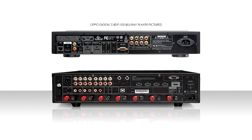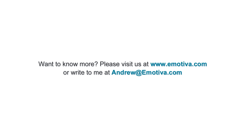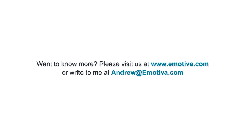With our AV preamp and multi-channel amplifier now connected, we can connect our source components — DVD, CD player, or Blu-ray player — to our AV preamp, and then route our AV preamp's video feed to our projector or HDTV. In future episodes, we're going to go over how to fine tune this 5.1 channel home theater we've just set up. But for now, I just wanted to go over the basics and show you how easy it was to get up and running in no time at all. Want to know more? Visit us at www.emotiva.com or write to me at andrew@emotiva.com.